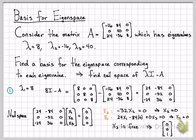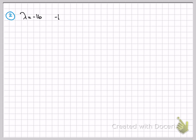Since x3 can be anything, I'll choose the value 1. This vector — with x1=0, x2=0, x3=1 — serves as a basis for all solutions. Any multiple of this vector is also a solution, since you'd still have zeros in the first two coordinates and x3 as any number. This vector forms a basis for the first eigenspace. Moving on to number two: λ equals negative 16.